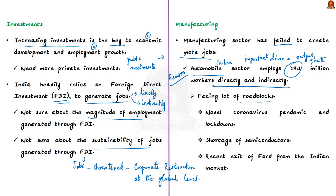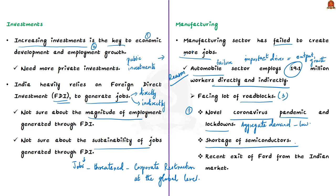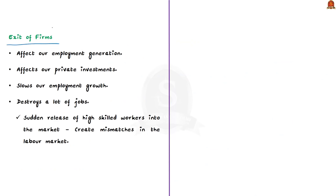The automobile sector faces three major roadblocks: first, the novel coronavirus pandemic and lockdowns have reduced aggregate demand and affected vehicle sales; second, the shortage of semiconductors is impacting vehicle production; and third, the recent exit of Ford from the Indian market will completely destroy many jobs and create more unemployment. High-profile exits of global firms from India are disastrous as they affect employment generation and private investments.